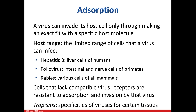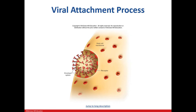Viruses are also specific as to what types of tissues they infect. The hepatitis viruses infect the liver, while mumps targets the salivary glands. Here we can see the virus using its spikes to attach to the receptors on the surface of the host cell. You can also see that it's an enveloped virus.